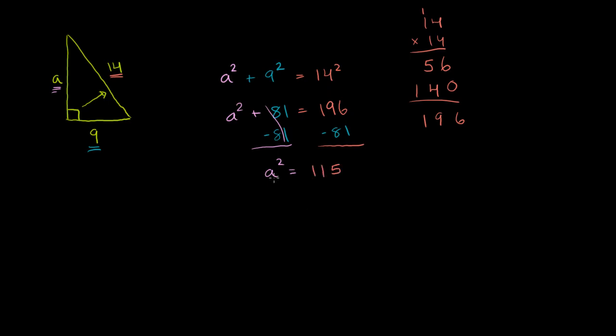And then to solve for a, we just take the square root of both sides, the principal square root, the positive square root of both sides of this equation. So let's do that, because we're dealing with distances. You can't have a negative square root or a negative distance here. And we get a is equal to the square root of 115.